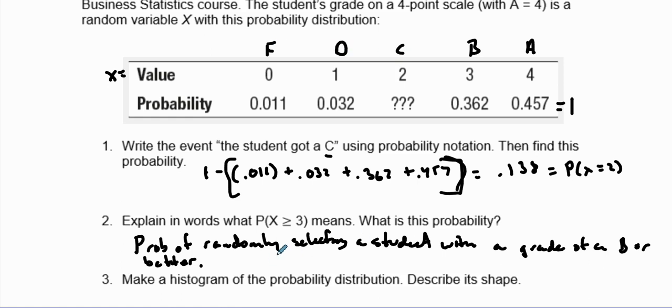What is that probability? That probability is going to equal, well, we're going to add those two together. So the probability of X being greater than or equal to three is going to equal 0.362 because we include three, and better than that would be 0.457.